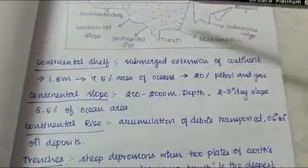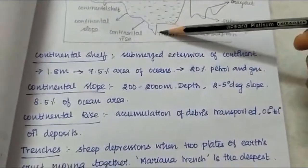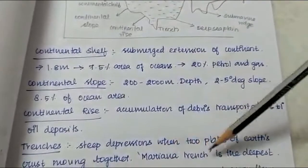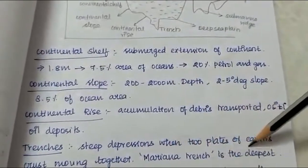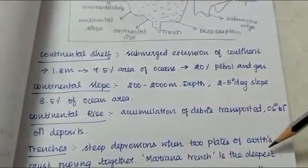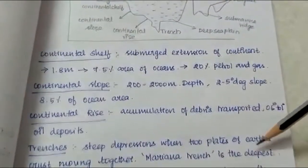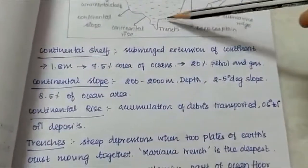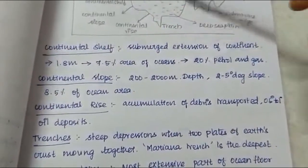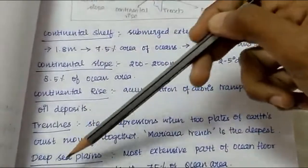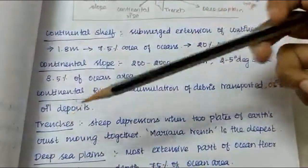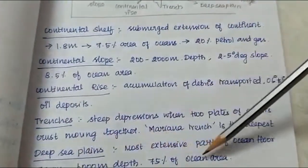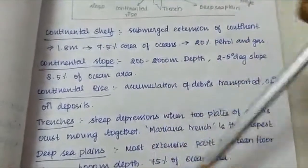Mariana Plane side — this is the Philippines. Mariana Trench. Deeper Strait Trench. This is the Philippines in Pasadena. This is the Deep Sea Plain. The Deep Sea Plain is the most extensive part of the ocean floor, at a depth of 3000 to 6000 meters. 75% of the ocean area is the Deep Sea Plain.